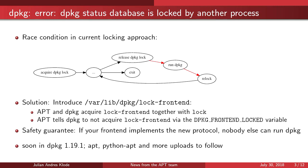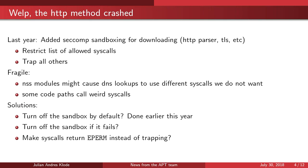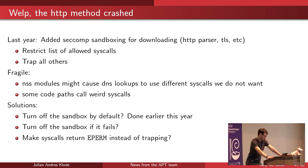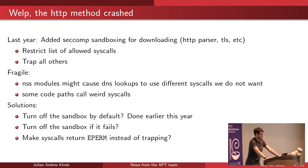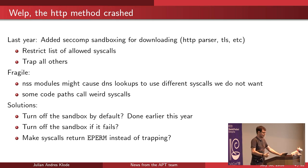The next thing is seccomp sandboxing. We added seccomp sandboxing last year for our downloading methods, because there's a lot of dangerous stuff in there, like TLS and HTTP parsers. We're working with untrusted input and want to ensure it can do the least damage possible if compromised. Seccomp sandboxing allows us to restrict the syscalls that can be executed — we can trap them, abort the program, or make other syscalls return an error.